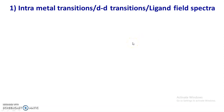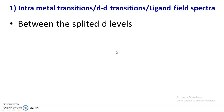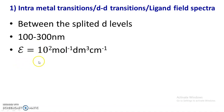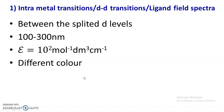Intrametal transitions or d-d transitions involve transitions that occur between the split d-levels of the central atom. When there is excitation of an electron from the t2g level to the eg level or vice versa, this is called a d-d transition. These transitions occur in the range of 100 to 300 nanometers, in the IR, UV, and visible region. The molar extinction coefficient values are around 10² dm³ mol⁻¹ cm⁻¹, and the d-d absorption spectra are very weak.